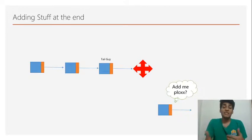So this responsibility of adding stuff at the end was given to the tail guy. But tail guy is pointing to something that is null. Now if this guy is added to the end, he has to point to null. Now the null guy is very famous.